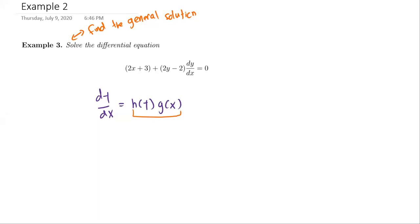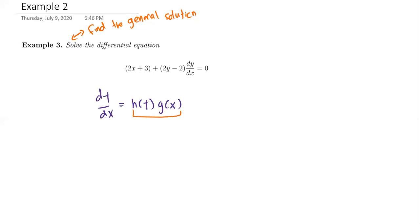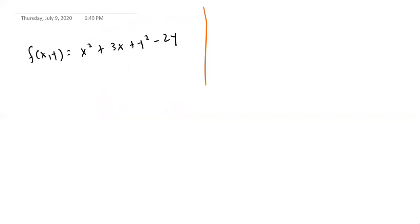Instead, we're going to do something different. Look at this differential equation and we're going to rewrite it. Let me just rewrite it: we have 2x plus 3 plus 2y minus 2 times dy/dx equals 0.